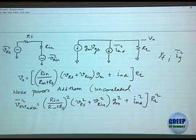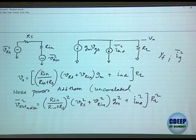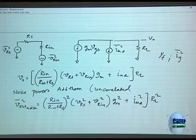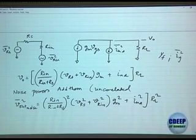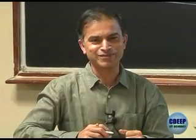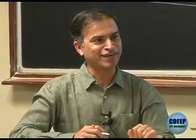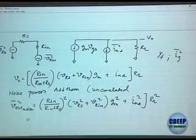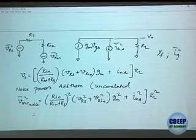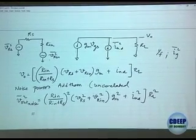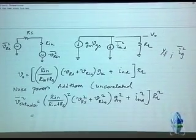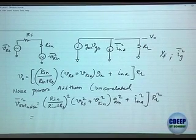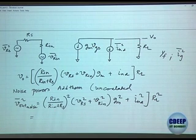If something is absolutely confusing, please raise your hand — I am building things piece by piece. The noise due to source resistance alone is V_RS² times R_L² times G_M². The standard noise figure equation is F equals total output noise divided by output noise due to V_RS alone. A student correctly pointed out that for V_RS the drop is across R_N, but for V_RN the drop is across R_S — since R_N equals R_S, both give the same factor R_N/(R_N+R_S), which is what I used.